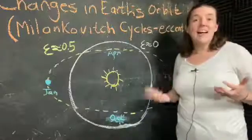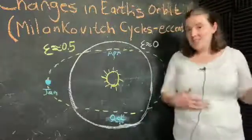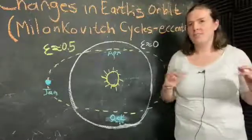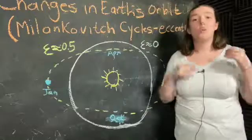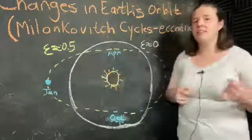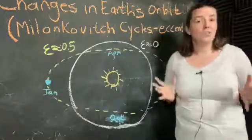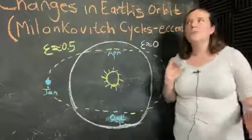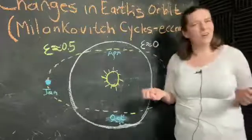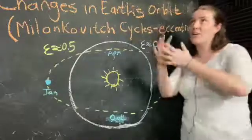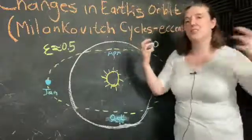Earth's eccentricity actually changes with a period of about 100,000 years. Over the course of 100,000 years, our eccentricity will increase and then decrease and get back to where it started. Those changes are caused by a gravitational tug of war: Jupiter and Saturn are trying to pull Earth one way and the sun's trying to pull it another.